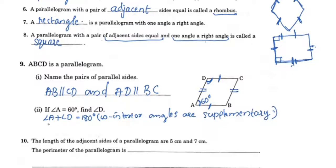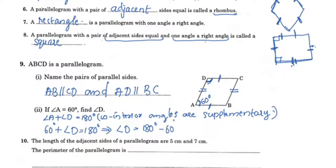The angle is 60°, so 60° plus angle D is equal to 180°. Therefore, angle D is 180° minus 60°, which equals 120°.